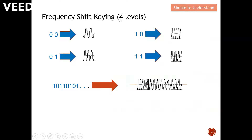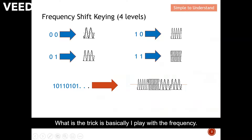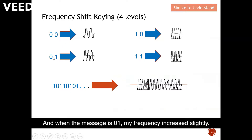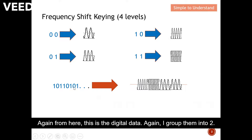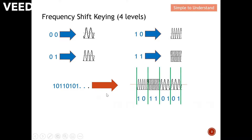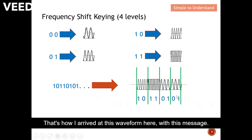Now let's look at frequency shift keying with four levels. The trick is to play with the frequency. When the message is 00 I use an extremely low frequency; when the message is 01 the frequency increases slightly; when the message is 10 I further increase the frequency; and when the message is 11 it has the highest frequency.